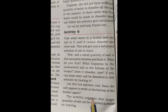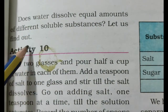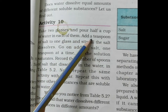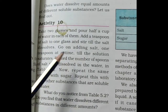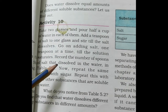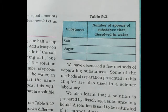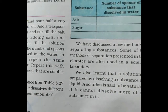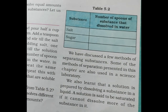Does water dissolve equal amounts of different soluble substances? Activity 10: Take two glasses and pour half a cup of water in each. Add salt to one glass one teaspoon at a time, stirring until the solution saturates. Record the number of spoons of salt dissolved, as shown in Table 5.2. Repeat with sugar and other soluble substances. You can do all these experiments at home and write the experimental results.